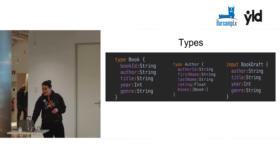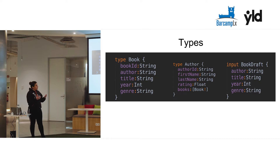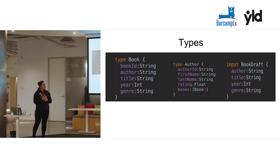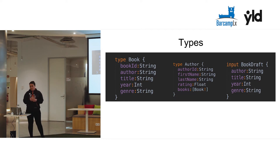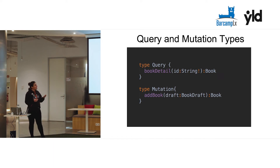Here I have some examples of how types are represented in GraphQL. We have two types and one input type. Inputs are mainly used for mutations in GraphQL. Here we have two examples — one for the query and one for the mutation.